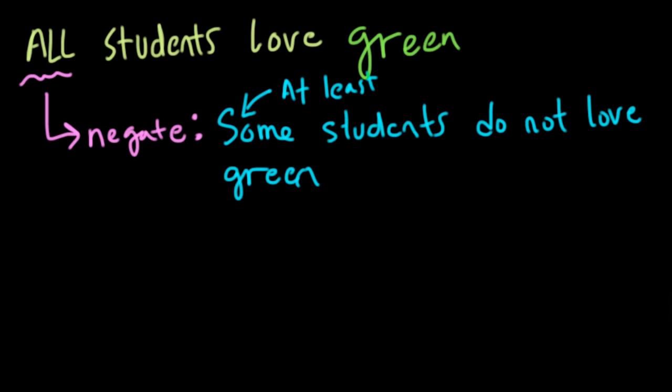Now, the some is not quantified. Some could be everybody in the group. We don't know how many it is. But the negation is that there are at least some students who do not love green. In a general sense, you can say that the students represent A, and loving green is statement B.